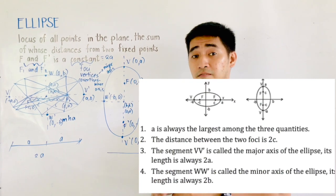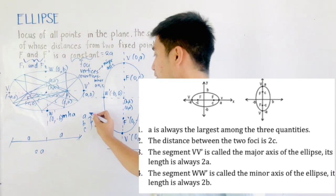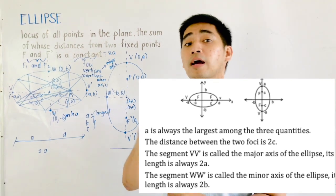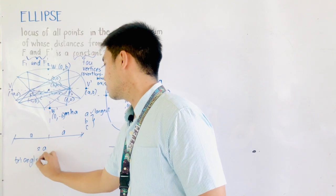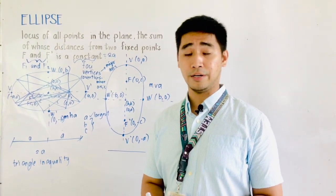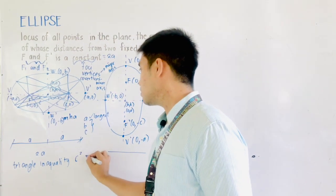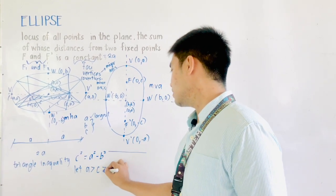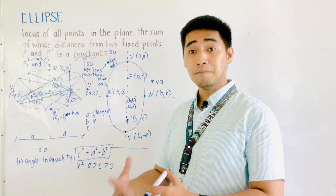Here are some characteristics of an ellipse. Since we have variables A, B, and C, remember that A is always the largest — it is the longest distance among the three quantities. Using the triangle inequality (unlike the Pythagorean theorem where C squared equals A squared plus B squared), for an ellipse the formula is: C squared equals A squared minus B squared, with A greater than C greater than 0.